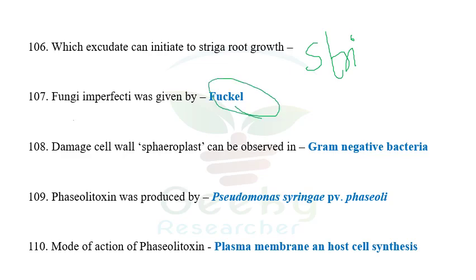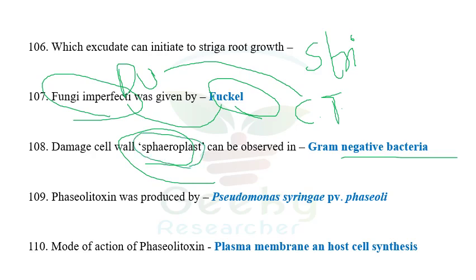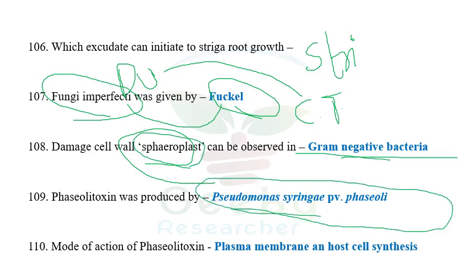Fungi Imperfecti was given by Fuckel, whereas C.T. Ingold called Deuteromycotina 'dustbin fungi.' Deuteromycotina has no sexual cycle and instead undergoes parasexual reproduction. The next question: damaged cell walls — spheroplast can be observed in gram-negative bacteria and protoplast in gram-positive bacteria. The next question: syringotoxin is produced by Pseudomonas syringae pv. syringae. The mode of action of syringotoxin inhibits plasma membrane and host cell synthesis.